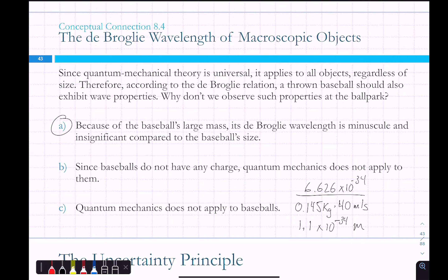That's de Broglie's wavelength. He essentially said: if light can be a wave and have particle properties, then an electron — which we think of as a particle — can also have wave-like properties. This isn't unique to light; it's part of the quantum mechanical world and the way things behave. You can think of the reason electrons form the orbital shapes we see — the probability densities — as standing waves of the electron. It exists within that region because that's where it's most likely to be, like a harmonic frequency on a string, constrained by different parameters.